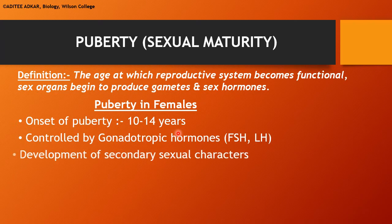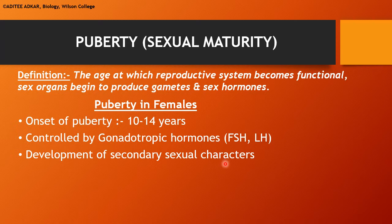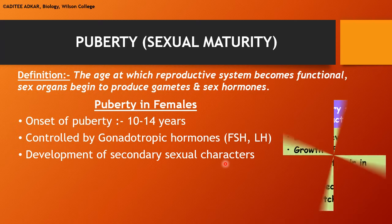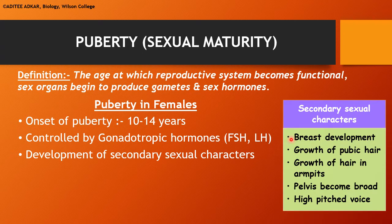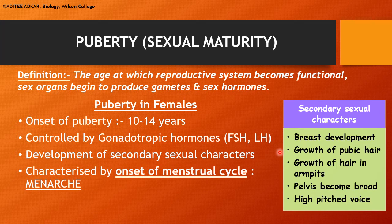The puberty period in females is characterized by the development of secondary sexual characters — these are characters by which a male and a female can be distinguished externally. Secondary sexual characters in females include the development of breasts, growth of hair in the pubic region and armpits, broadening of the pelvis or hip region, and a high-pitched voice. Another very important characteristic of puberty is the onset of the menstrual cycle, known as menarche.